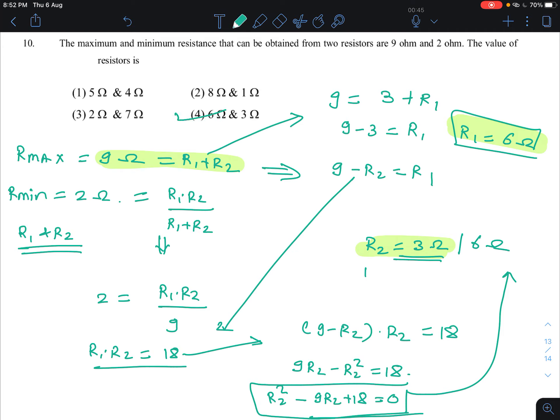The answer is option D, 6 ohm and 3 ohm. They will become maximum and minimum resistance, that is 9 and 2.